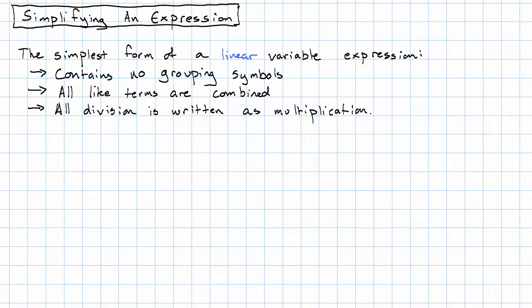To simplify an expression means to write it in simplest form. For the kinds of expressions we're dealing with right now, being in simplest form means following all these rules: containing no grouping symbols, all like terms are combined, and all division is written as multiplication.